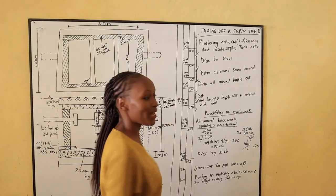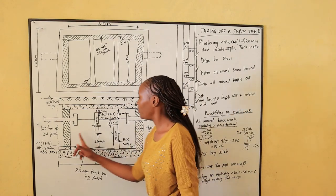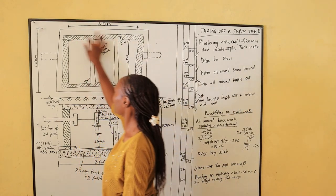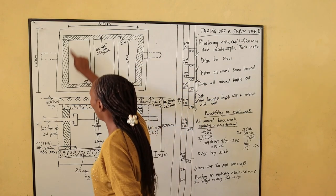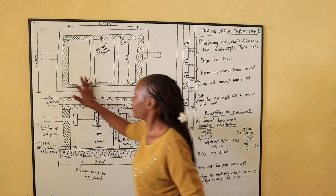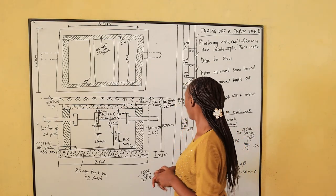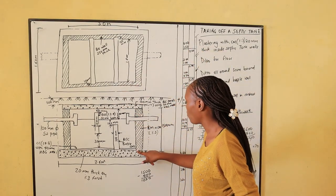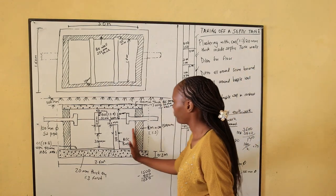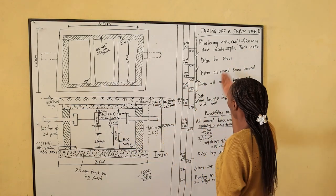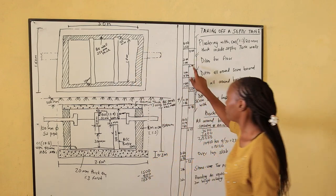Let's go to plastering of the septic tank. We start with the septic tank walls — they need to be plastered all around. We find the perimeter of the inside face of the wall: 3m plus 1m plus 3m plus 1m = 8 meters. So 8 meters is the length of the plaster inside. Plastering with cement mortar, 20mm thick, inside the septic tank walls — the height of the brickwork is 1.5m. For the floor: it's 3 meters by 1 meter, giving an area of 3 square meters.